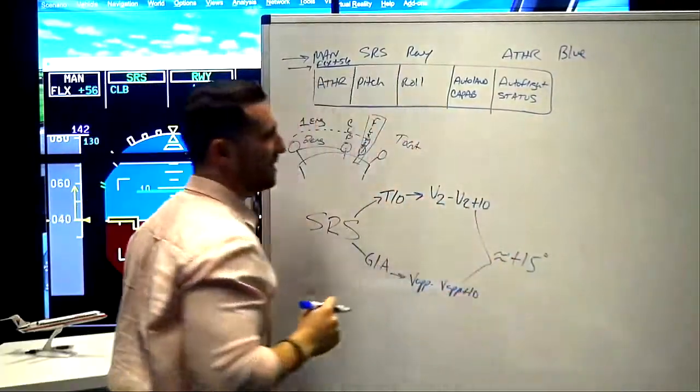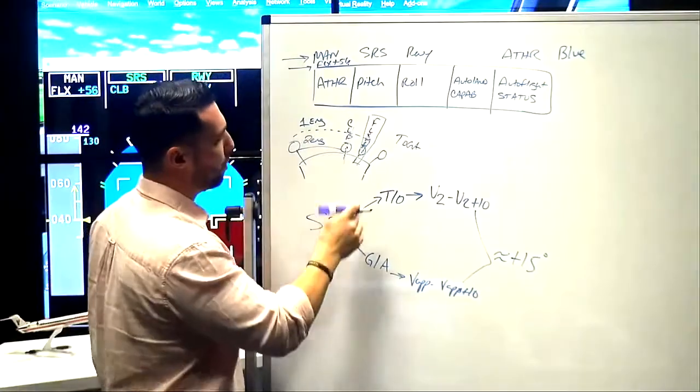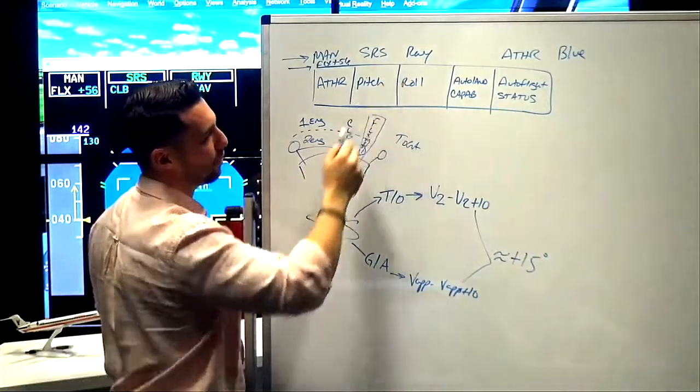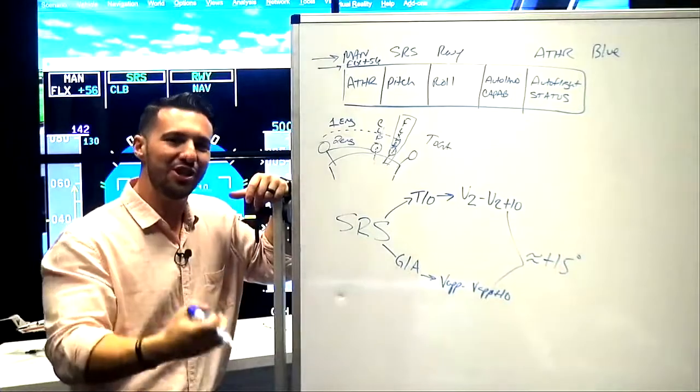Light blue is armed. We're not in the active range, and when we reduce the thrust to the climb detent back here, then you're going to see auto thrust go white. If you understand the why behind the what, the retention goes through the roof.